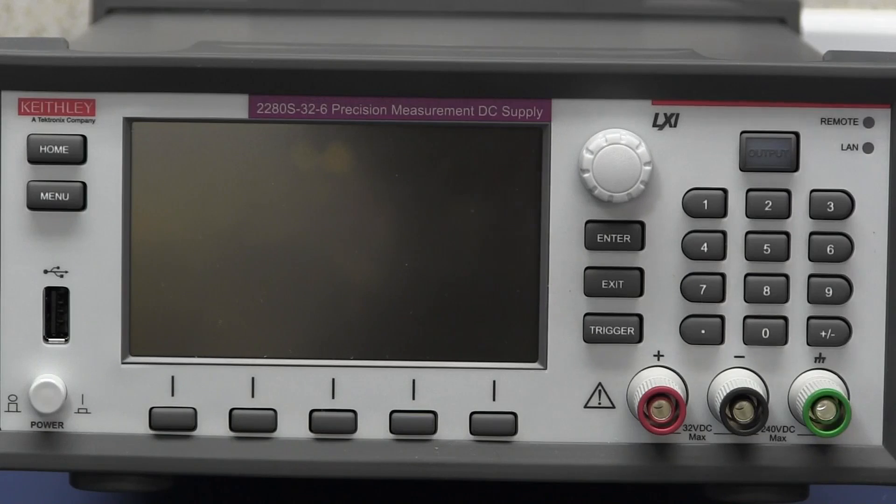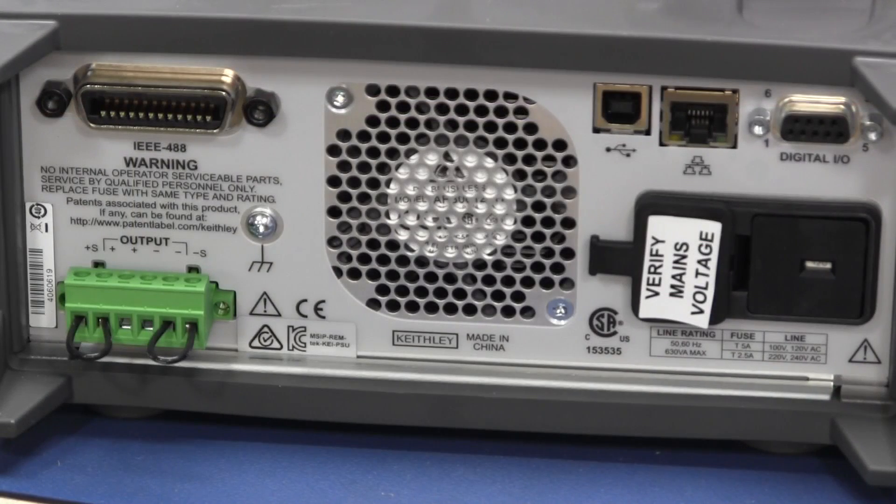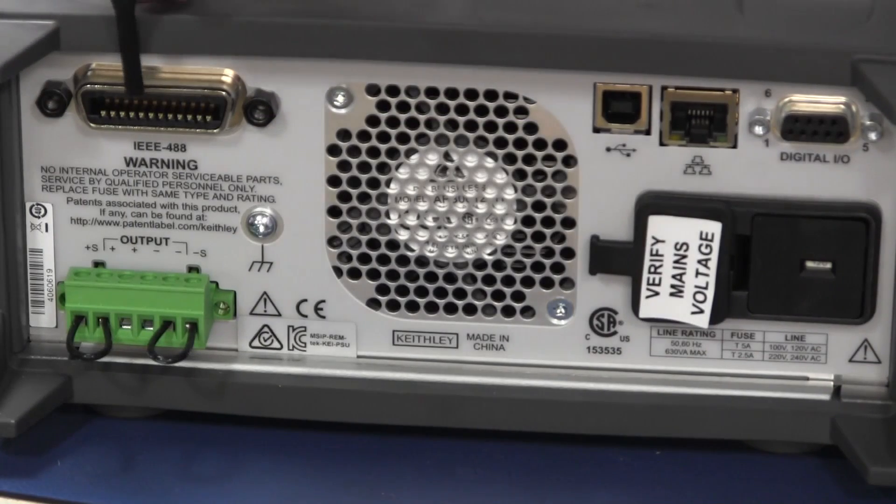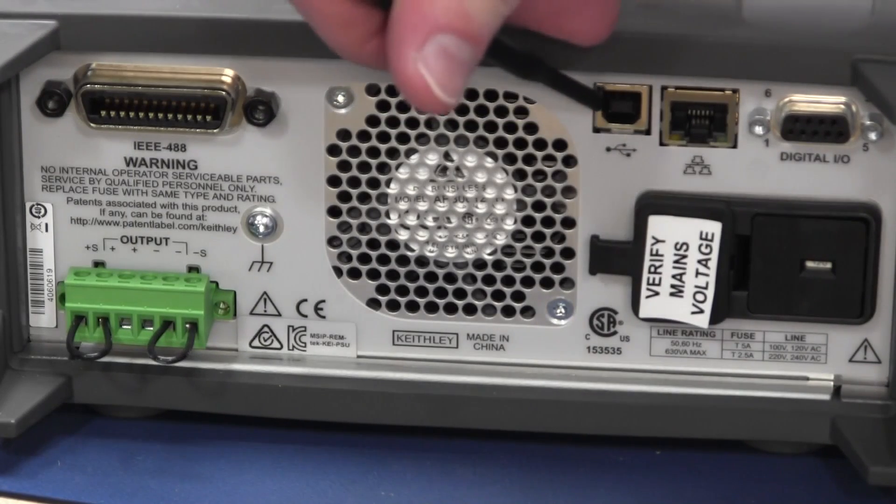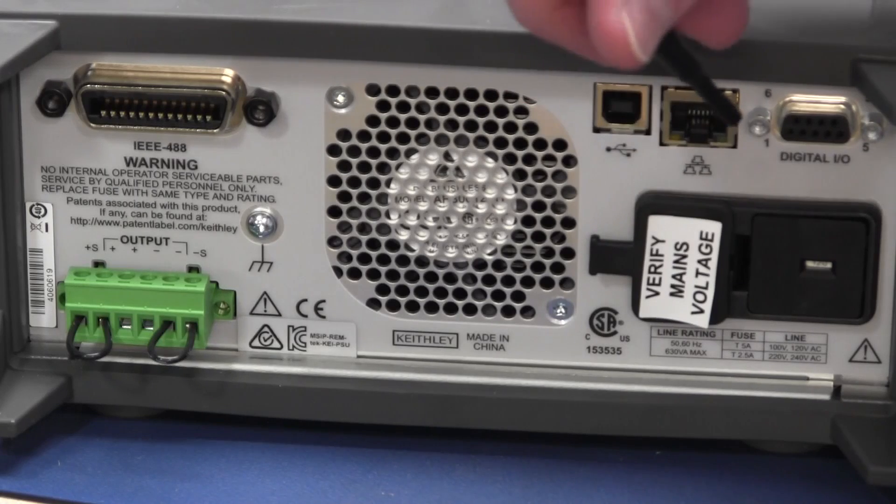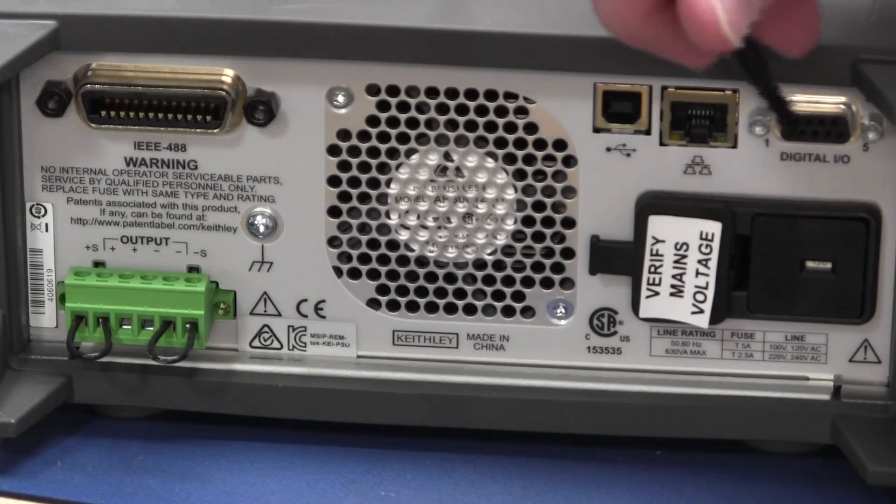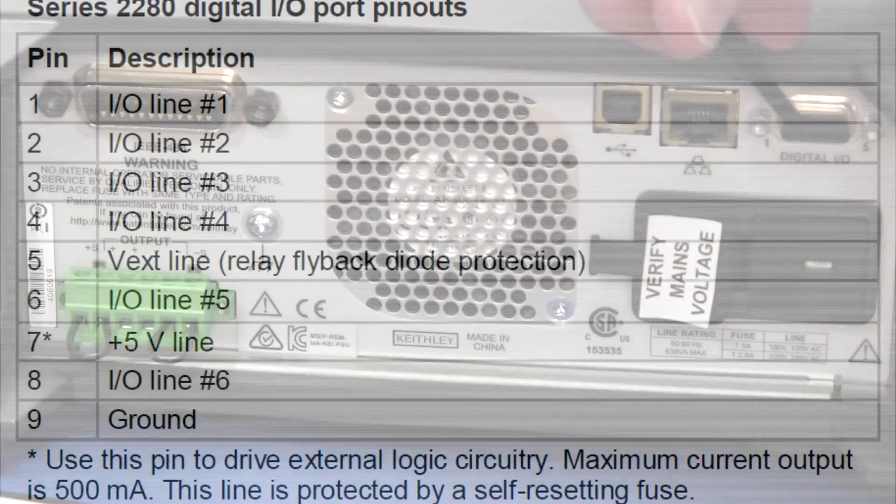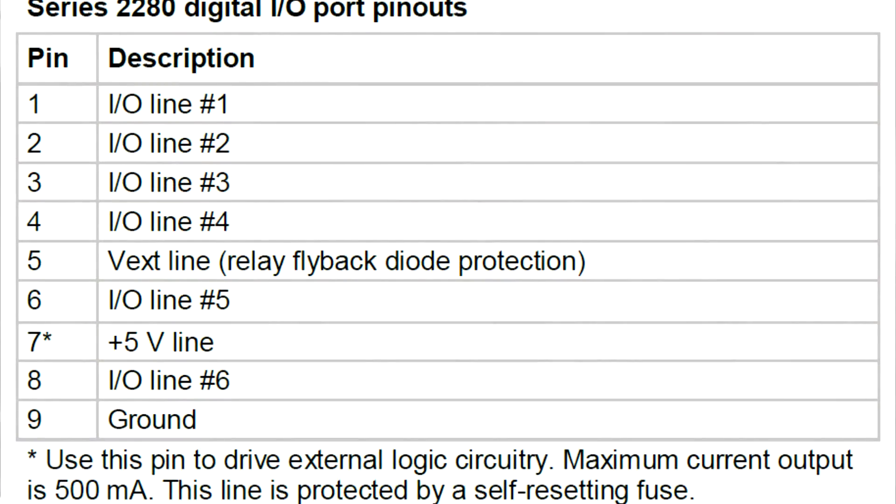Now let's take a quick look at the back. The back panel contains all the usual stuff, such as GPIB, USB B connector, full size, LAN with LXI capability, a little digital I/O connector. This is not serial or TTL up here, these are some digital I/O pins.